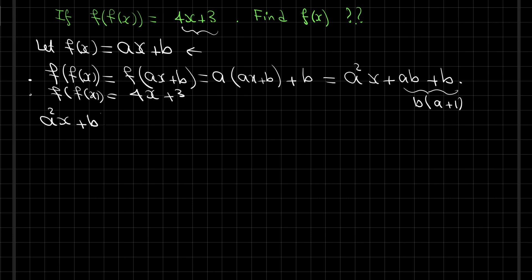The coefficient of x is equal to the coefficient of x, so we have a squared equals 4. And 4 can be written as 2 squared, so this is equivalent to say a equals plus 2 or a equals negative 2.